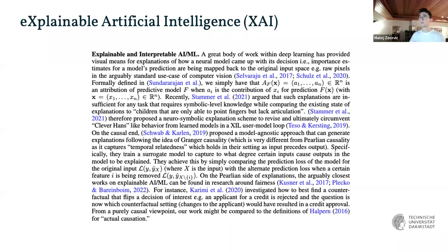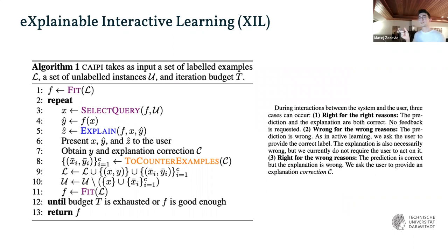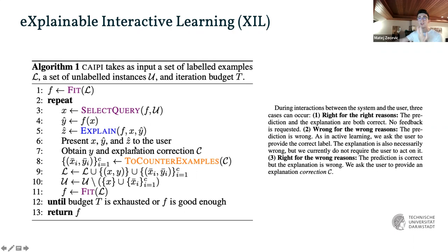Turning from XAI to XIL — explainable interactive learning — from the Kastner paper. The algorithm: you fit your model, ask a query, then you explain; the explanation Z is given to the user and must be understandable by the user. The user provides a correction which is fed back into the system, you refit, and repeat. There's an interesting distinction: you can be right for the right reasons, wrong for the wrong reasons, or right for the wrong reasons — where the model finds the correct answer but for totally spurious reasons. That's a causal notion.